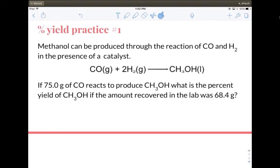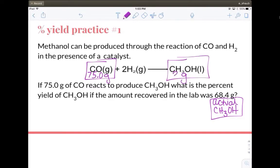So this reaction already gives you a balanced chemical equation and I tell you if 75 grams of carbon monoxide, so if I have 75.0 grams of this reacts to produce methanol, what is the percent yield if the amount recovered in the lab was 68.4 grams. So this is the actual. This is the actual CH3OH. So in order to find the percent yield I need to know the theoretical amount of my methanol, which I do not give you in this problem. But if you notice I give you the 75 grams of CO.